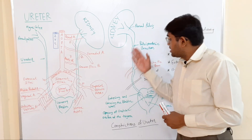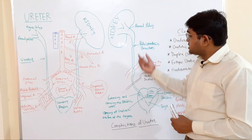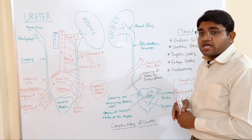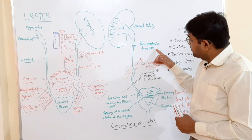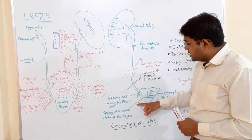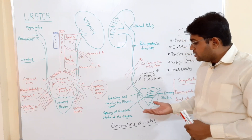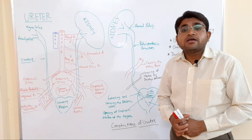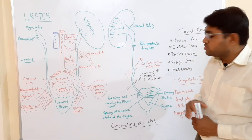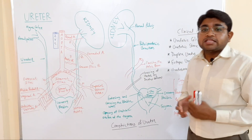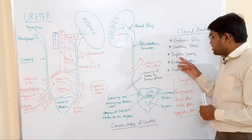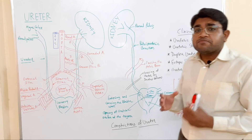Ureteric stones most commonly get fixed at one of the constrictions. The three main areas where stones are most likely to lodge are: the pelvi-ureteric junction, at entry into the bladder wall, and at the ureteric opening at the trigone. Stones fixed at these constrictions cause ureteric colic.